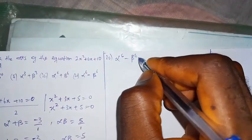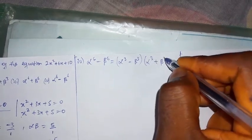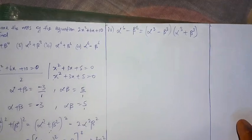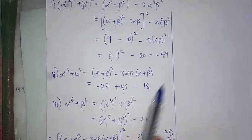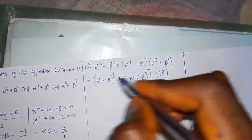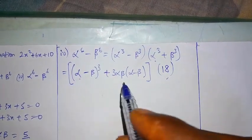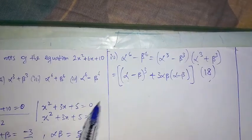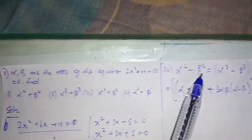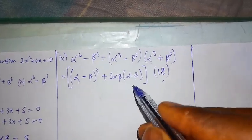Finally for number four: alpha⁶ minus beta⁶ equals (alpha³ − beta³)(alpha³ + beta³). I've already got alpha³ plus beta³ as 18. However, solving 2x² + 6x + 10 = 0 gives a negative discriminant, so I'll be getting complex roots. Since we'd need complex number values to solve this, I'll stop here.